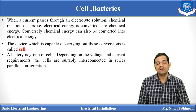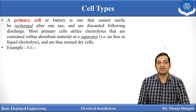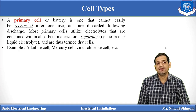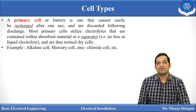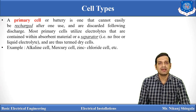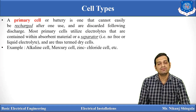Depending on the voltage and current requirement, cells are connected either in series or parallel. There are basically two classifications: primary cell and secondary cell. A primary cell or battery is one that cannot be easily recharged after one use — it is a use-and-throw kind of cell. Once discharged, it cannot be recharged and is discarded. Most primary cells utilize electrolytes contained within absorbed material or a separator, with no free liquid electrolyte, and are thus termed dry cells. Examples include alkaline cell, mercury cell, and zinc chloride.